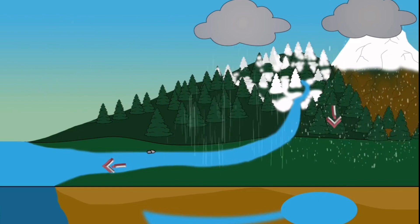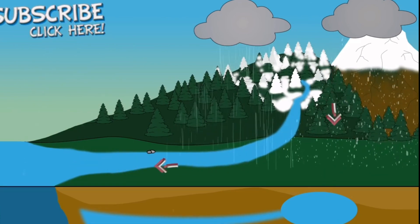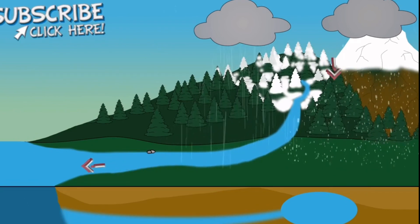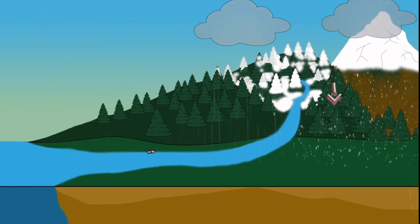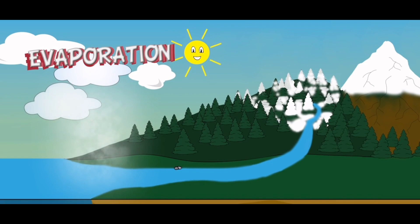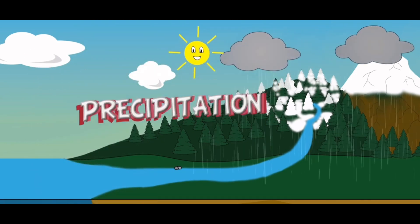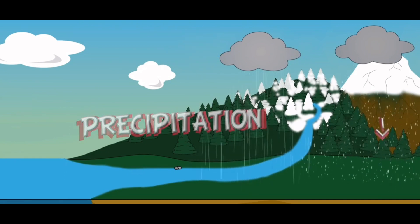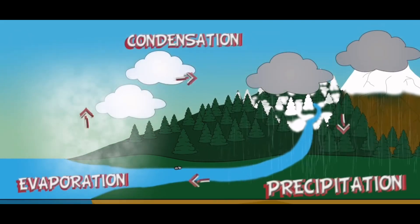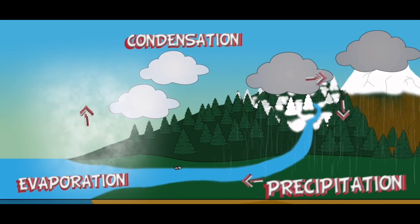All this water must continue its long journey, covering vast distances until it finally reaches the sea. When it arrives at the big blue sea, it will once again begin the process: evaporation, condensation, precipitation. That is why it's called the water cycle, because it forms a never-ending circle. Isn't water just so incredible?